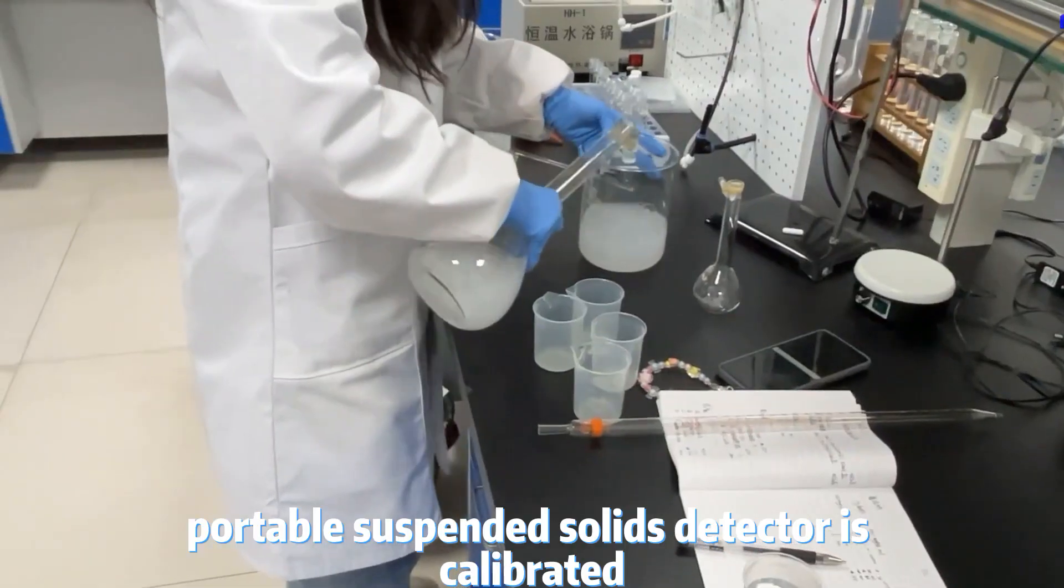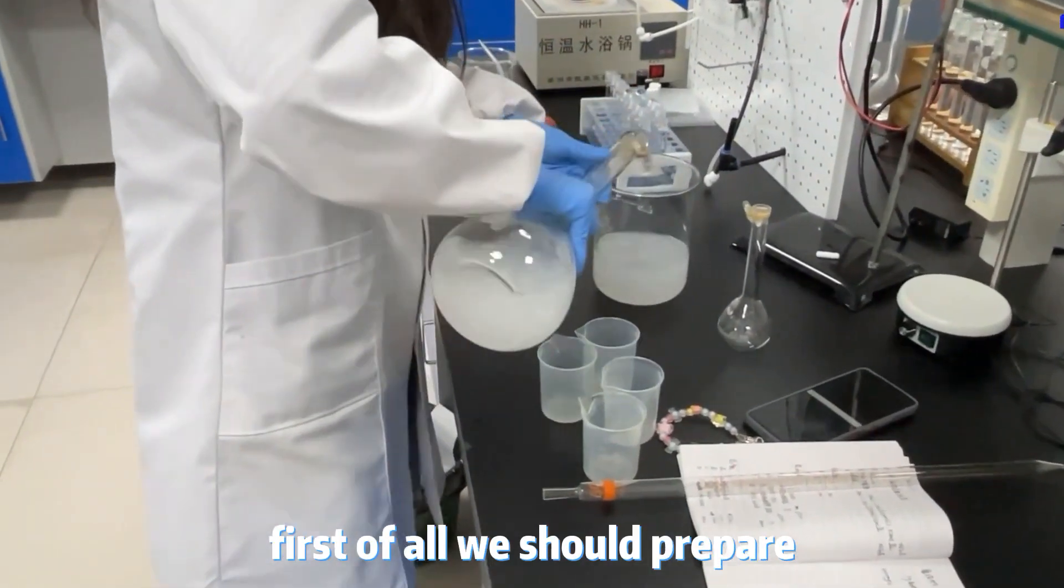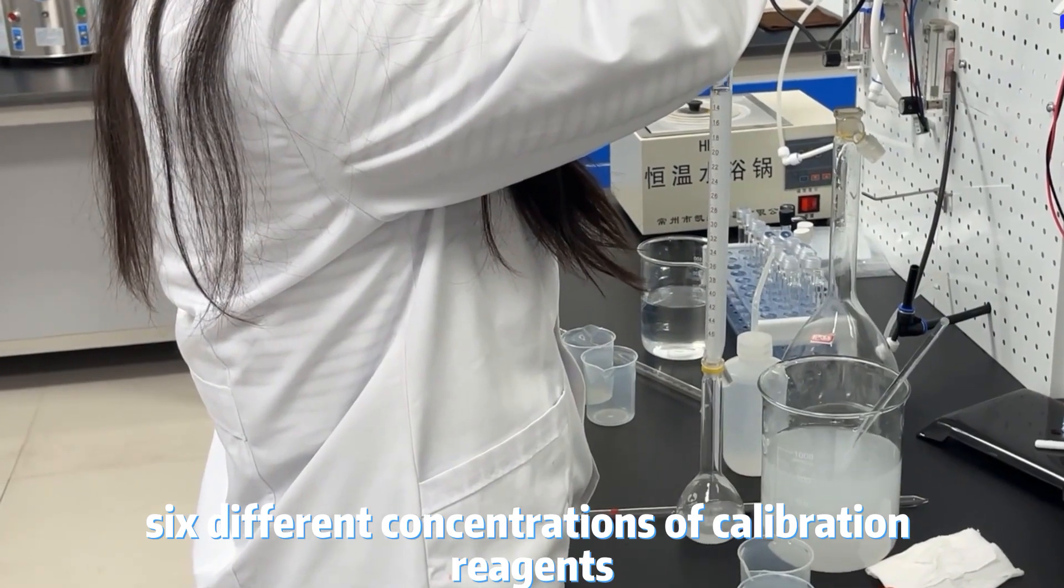Come with us today to see how the portable suspended solids detector is calibrated. First of all, we should prepare six different concentrations of calibration reagents.